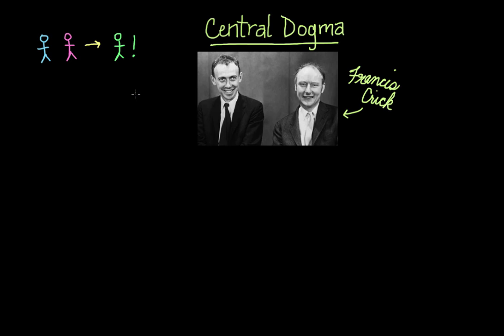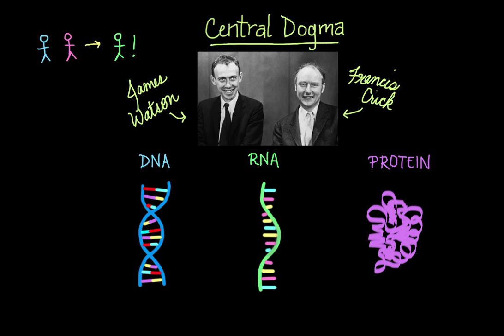Some very clever scientists, Francis Crick and James Watson, or Watson and Crick as they're often referred to, are credited with discovering this dogma, which they say deals with the detailed residue-by-residue transfer of sequential information. Or, as Marshall Nirenberg, who won the Nobel Prize in Physiology and Medicine, once said: DNA makes RNA makes protein.